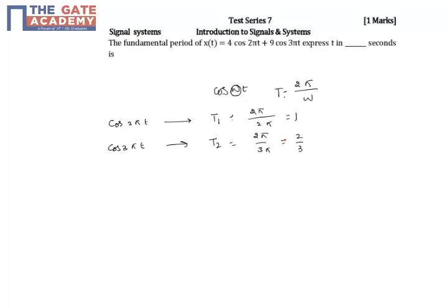So the resultant fundamental period is m1T1 equals m2T2 equals T. So you have to choose m1 and m2 such that they are integers.